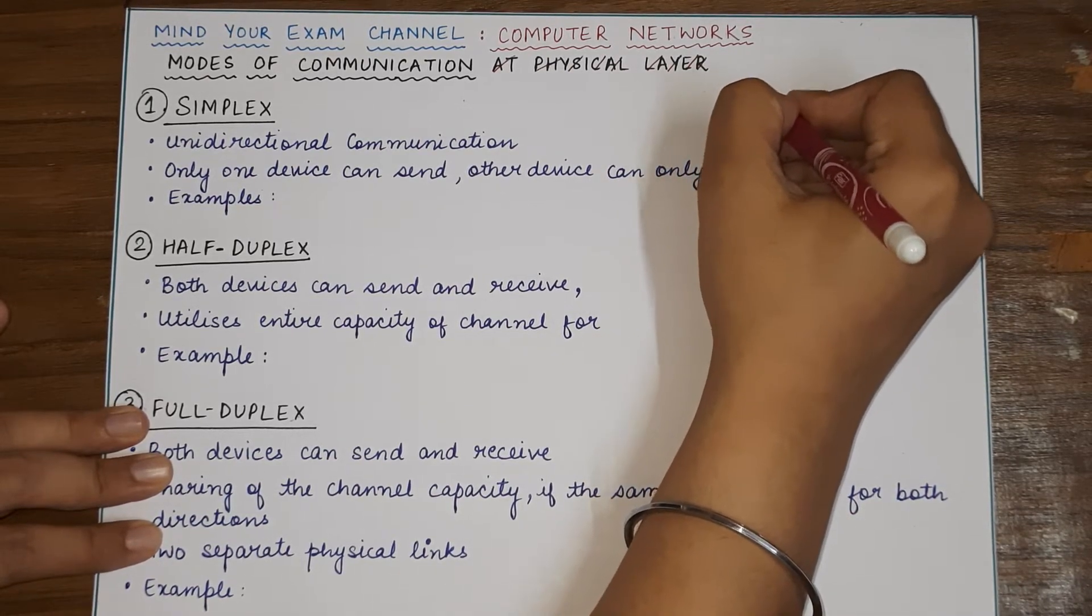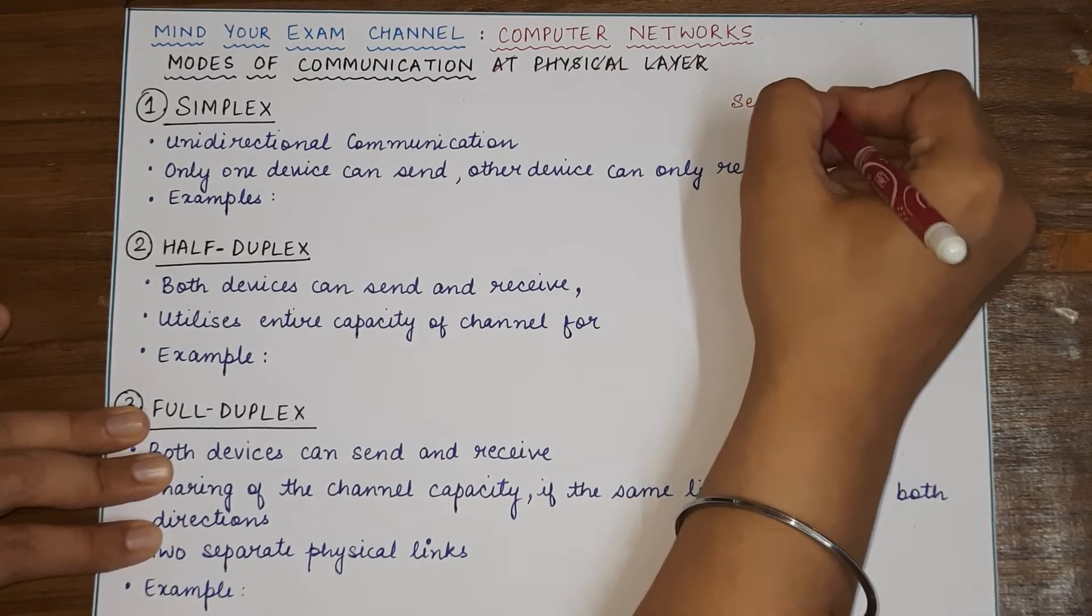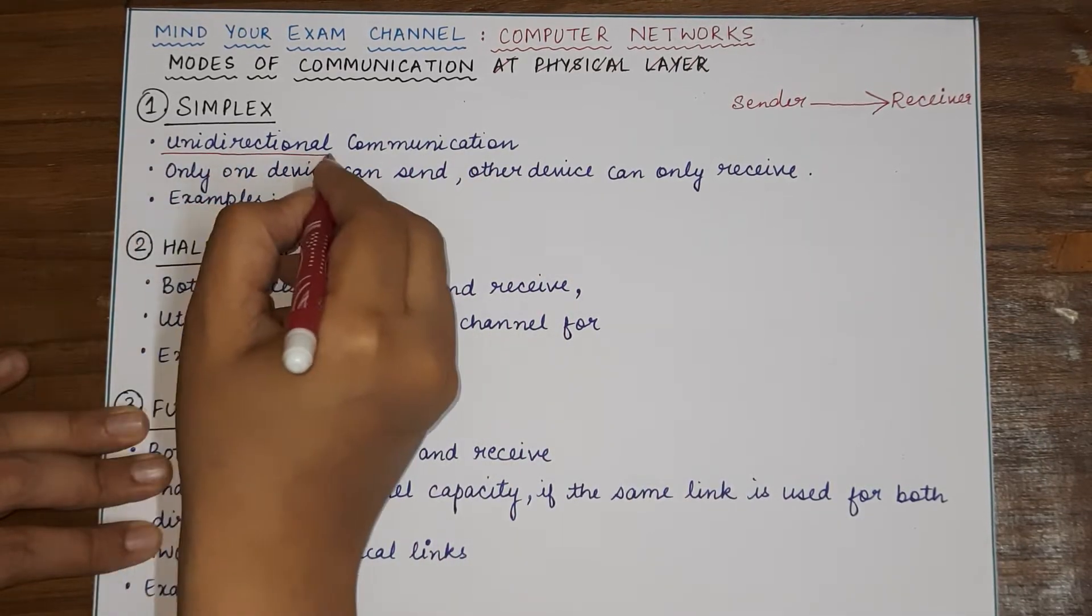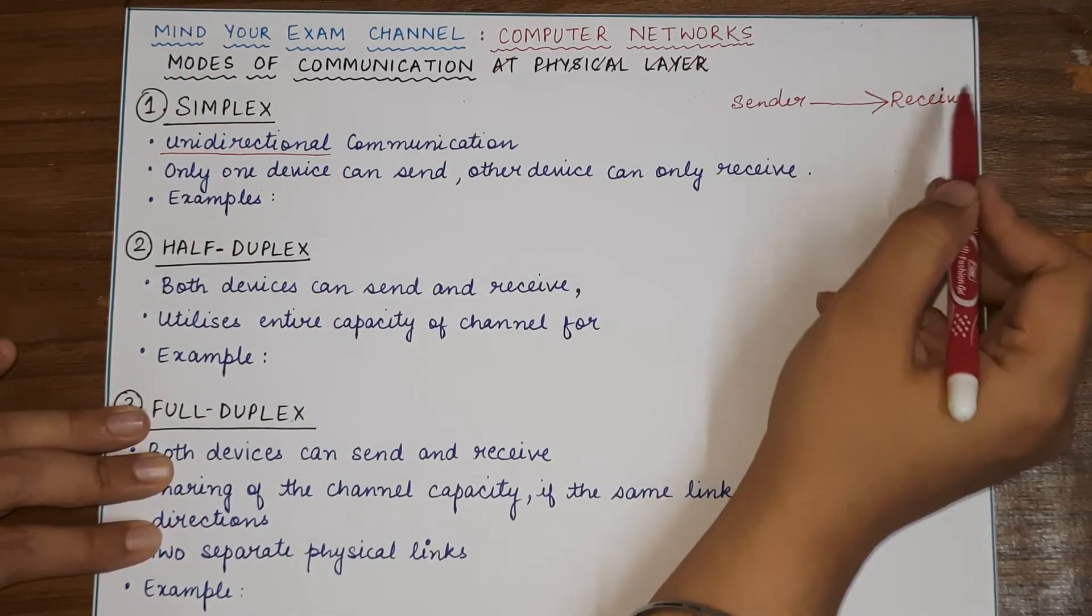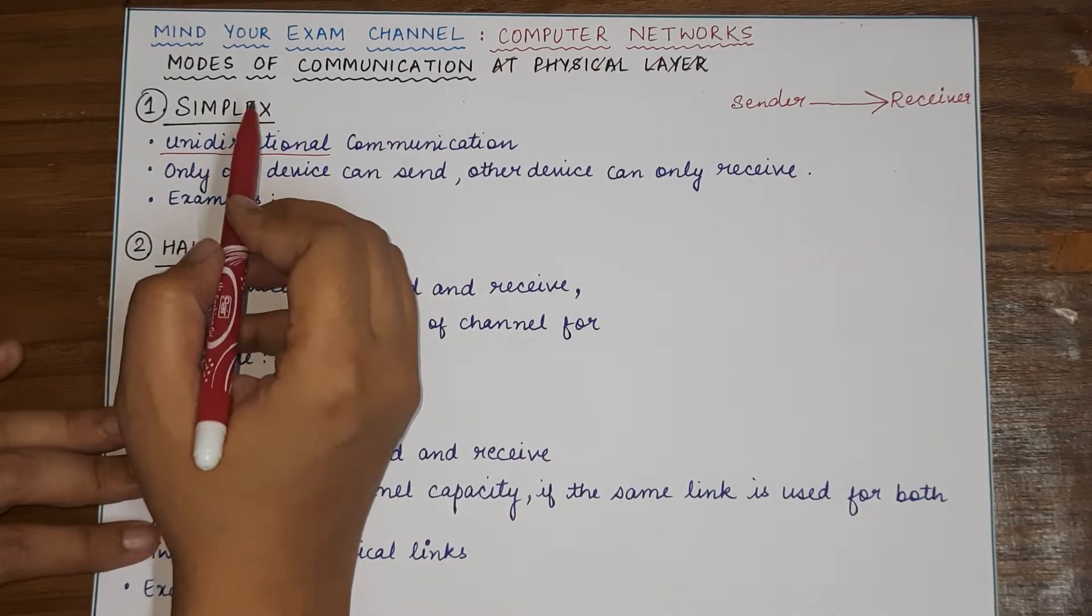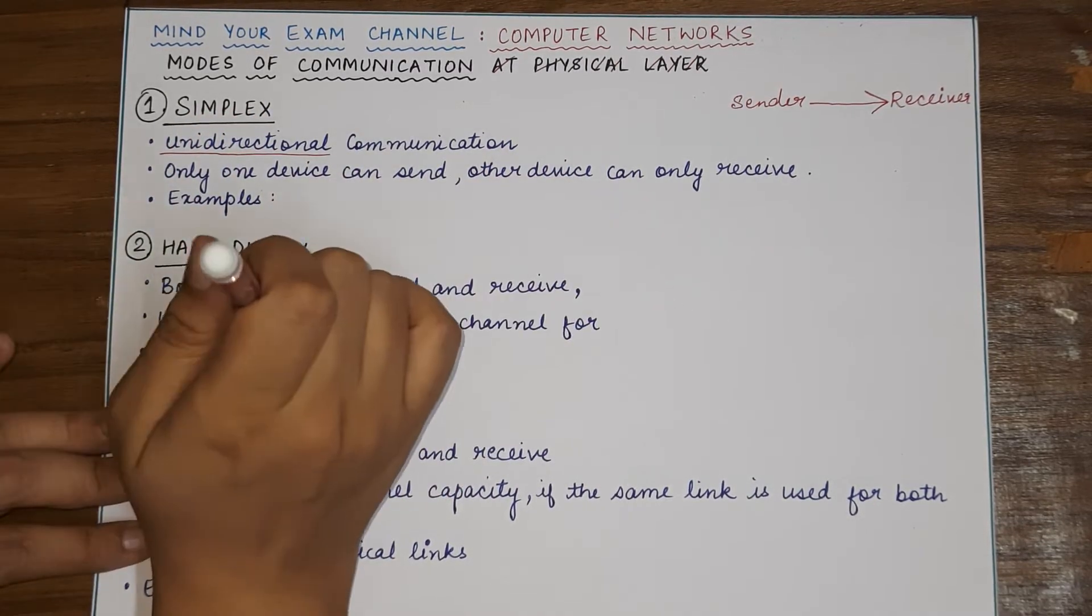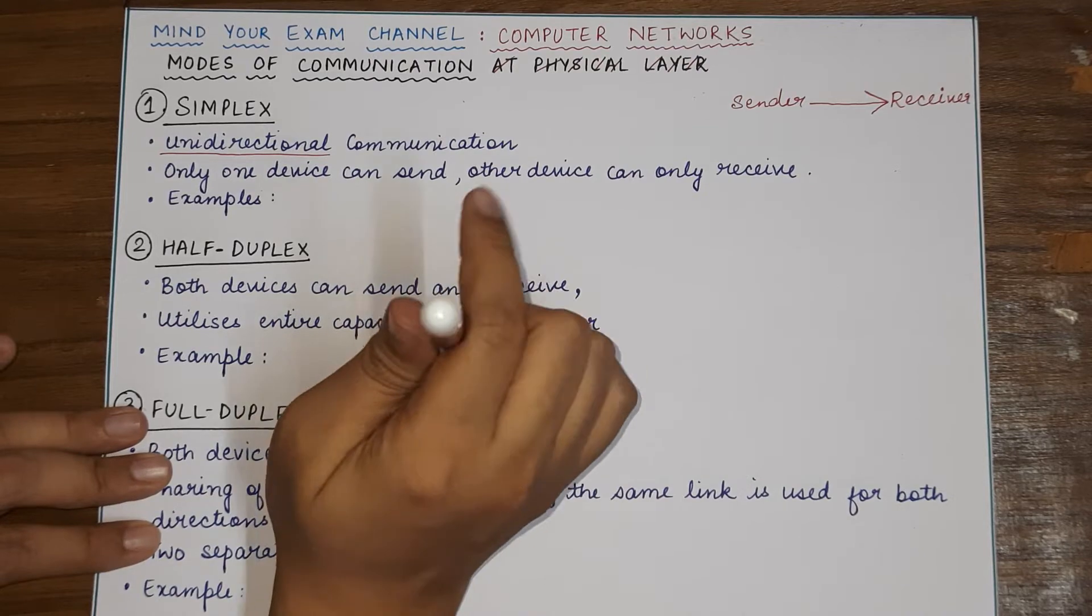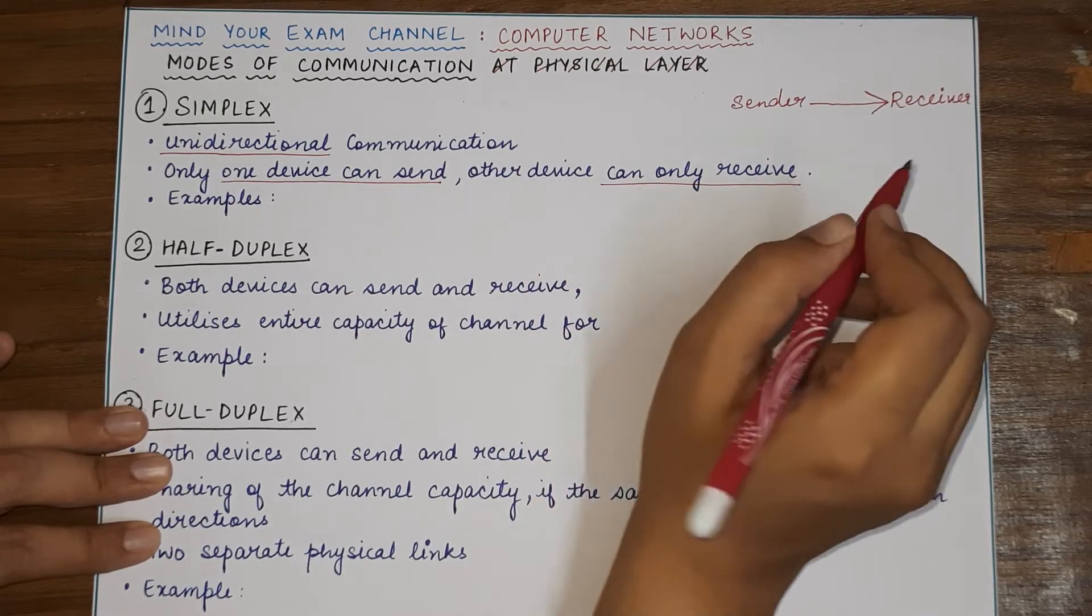The first possibility is that only the sender is allowed to send the data and the receiver can only receive the data. That means the communication is unidirectional in nature and it will never happen that the receiver is also allowed to send the data. So, this type of communication is known as simplex communication. In simplex communication, the communication happens only from one device to the other device and never in the opposite direction. So, only one device can send the data and the other device can only receive the data.